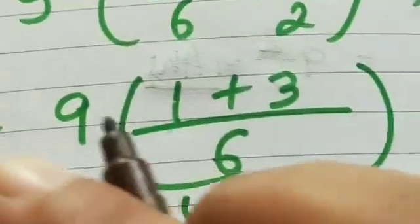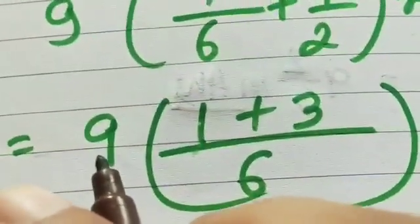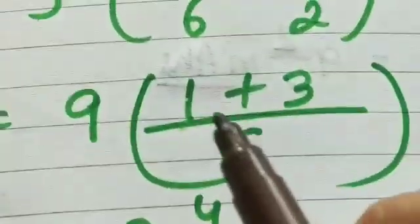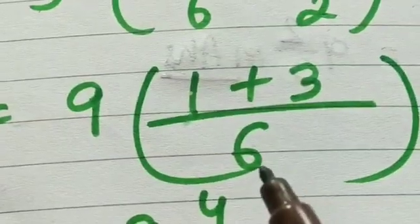So these two numbers will be added. So 1/6 plus 3/6. So we'll come to the next one: 9, that is the sum of the whole numbers, and 1 plus 3 by 6. That will give rise to 9 4/6 meters.